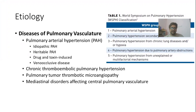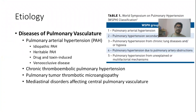Diseases of the pulmonary vasculature are also responsible for cor pulmonale. These include pulmonary arterial hypertension, which may be idiopathic or due to drugs or toxins, as well as chronic thromboembolic pulmonary hypertension, which increases pulmonary artery pressure and causes cor pulmonale. Similarly, pulmonary tumor thrombotic microangiopathy and mediastinal disorders affecting the central pulmonary vasculature can also cause cor pulmonale.